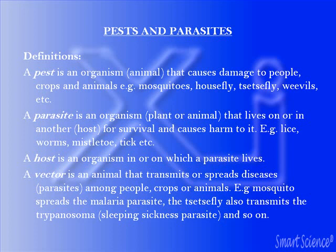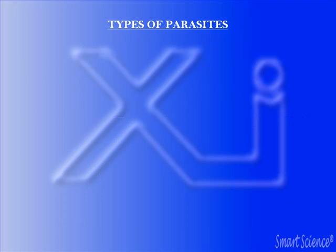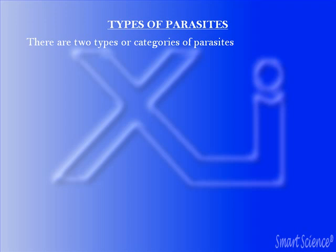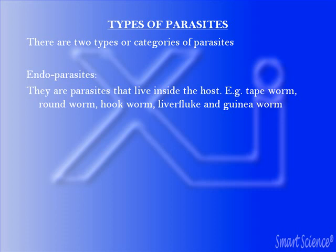Parasites are grouped under two categories. The first is endoparasites — these are parasites that live inside the host. Examples are the tapeworm, the roundworm, the hookworm, the liver fluke, and the guinea worm. All these parasites live inside their hosts.